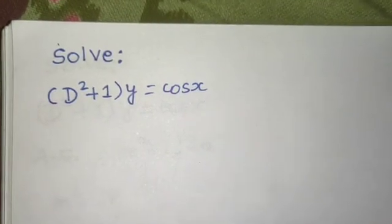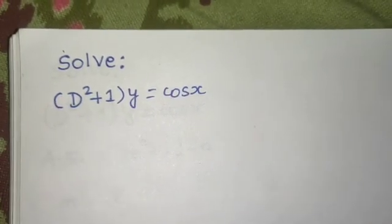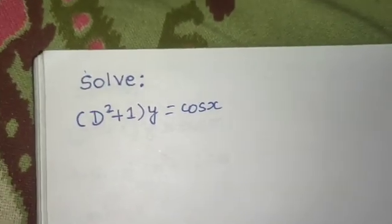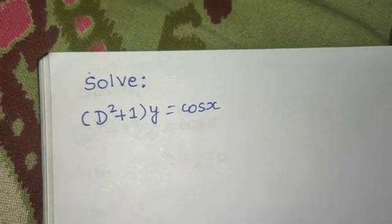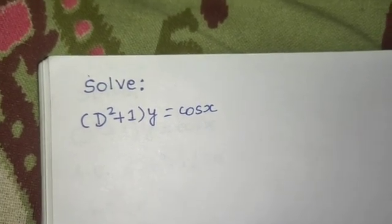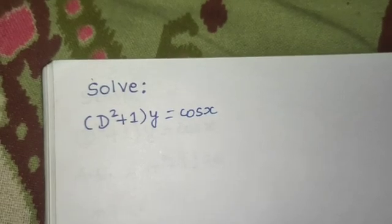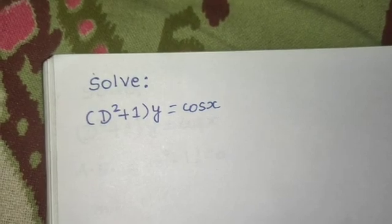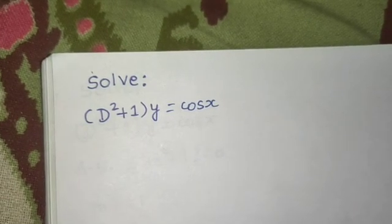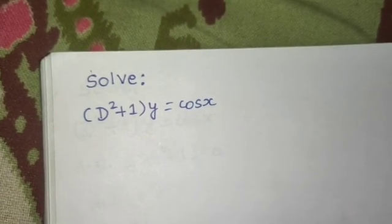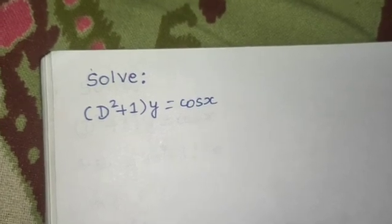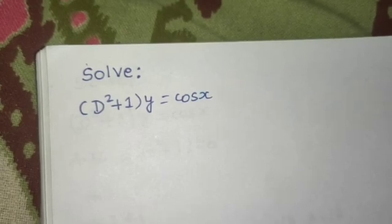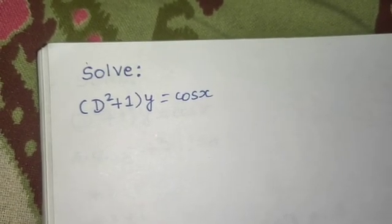Hello everyone. This question is from linear differential equations with constant coefficients. We have four steps to solve it: first, find the auxiliary equation and solve it to get values of m; second, write the complementary function; third, find the particular integral; and the fourth and final step is to write the final solution, which is y equals complementary function plus particular integral.